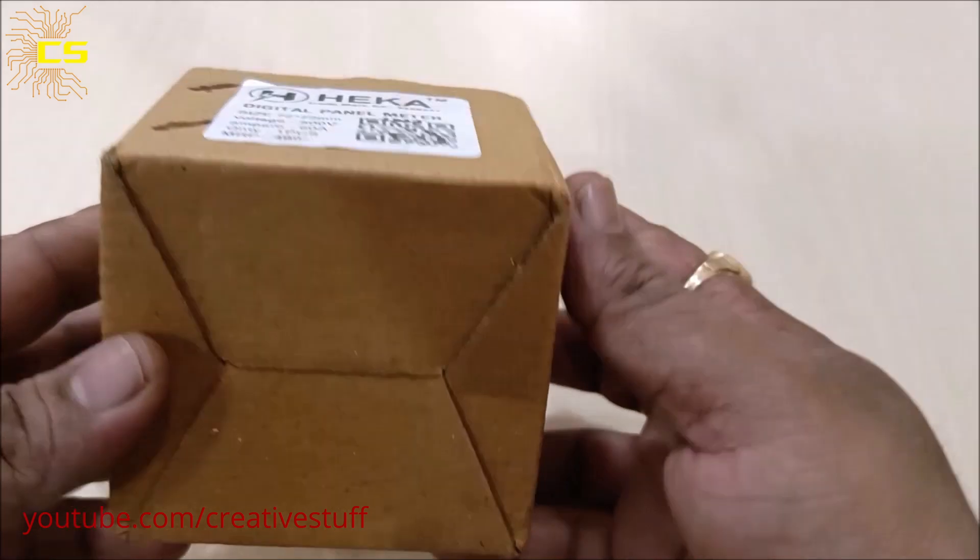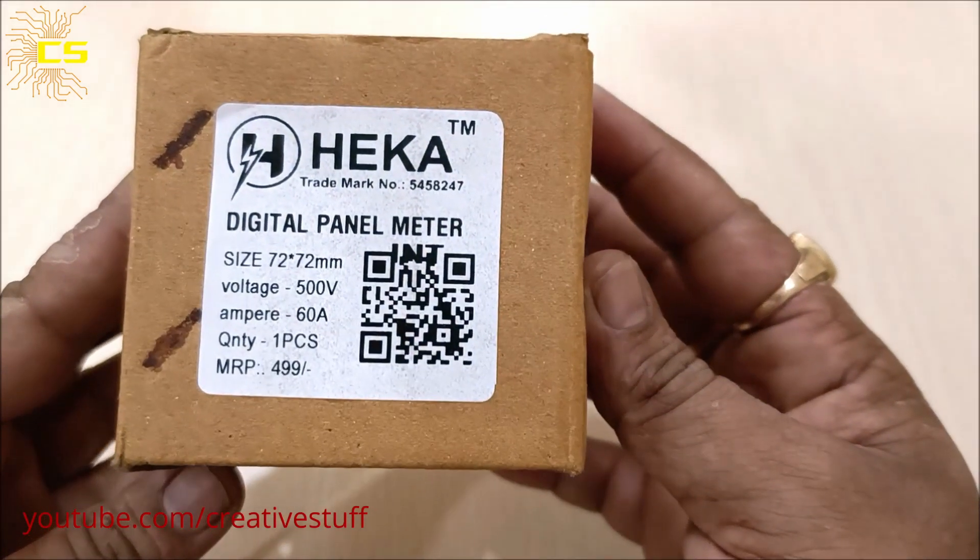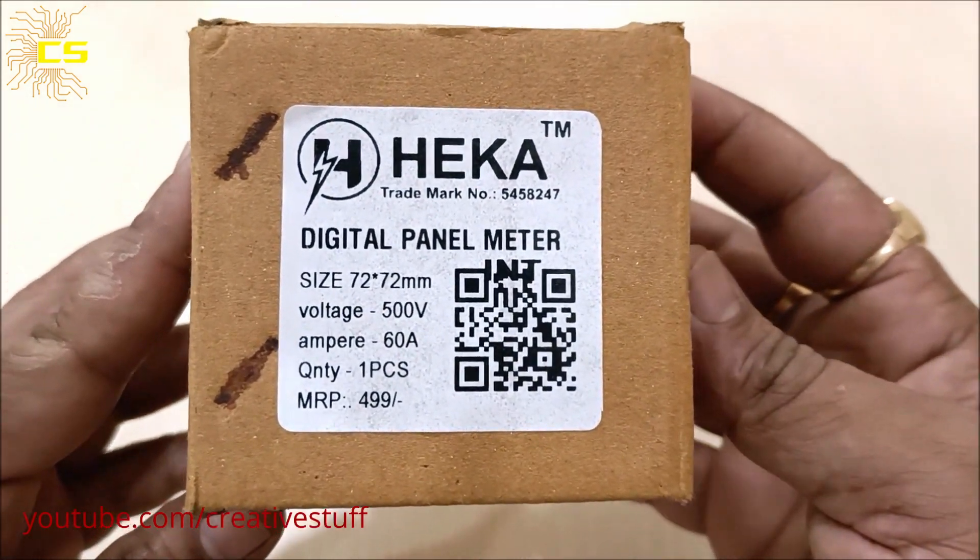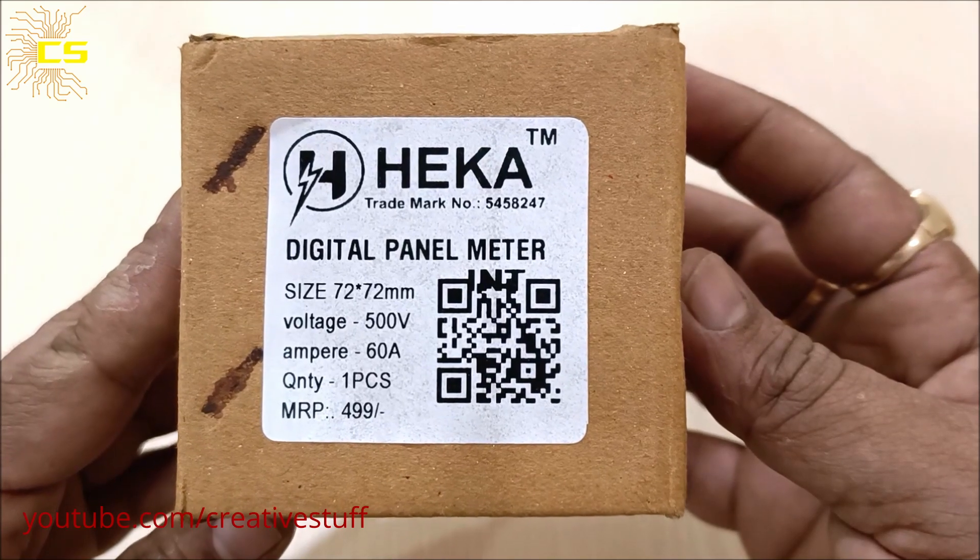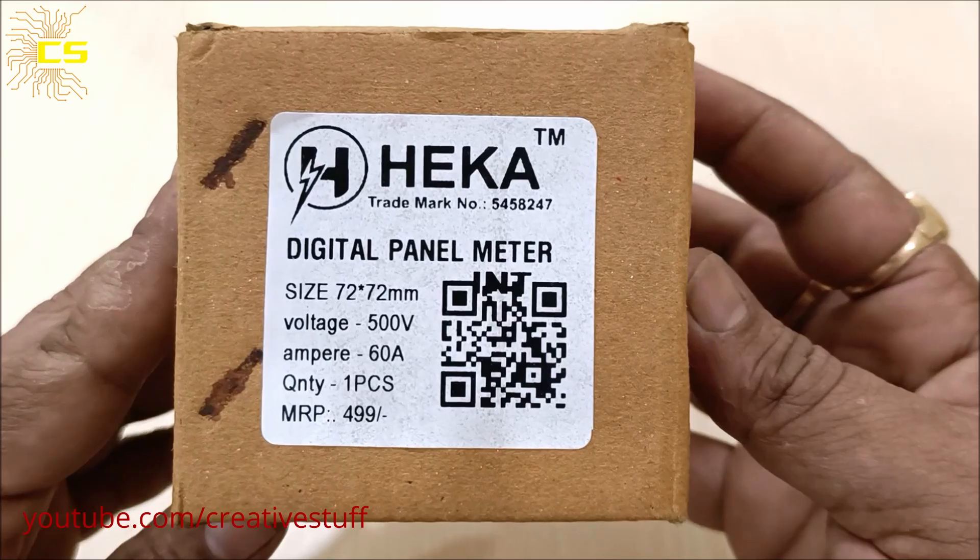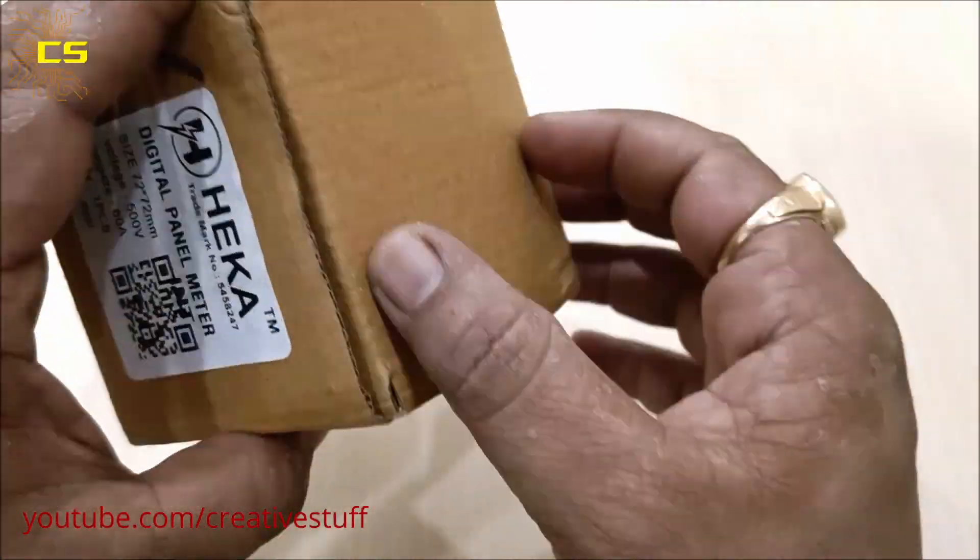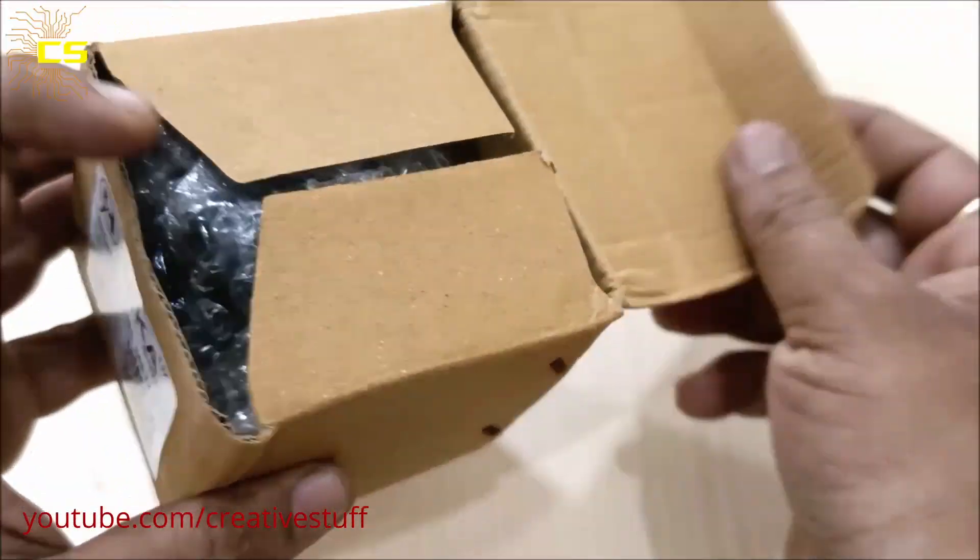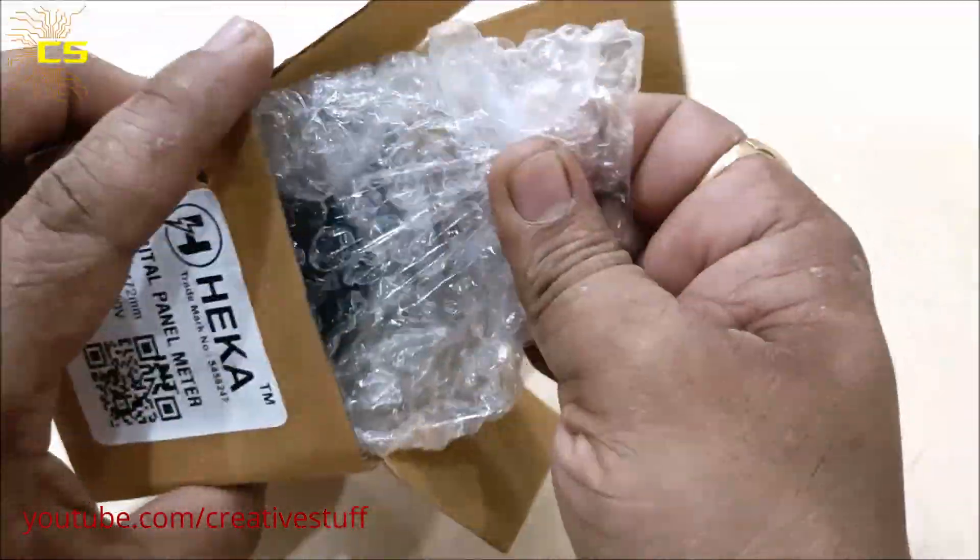Hello and welcome back to Creative Stuff. Recently I bought this Heka digital volt amp panel meter. It can measure up to 500 volts and 60 amperes. Let's open the box and see what's inside.